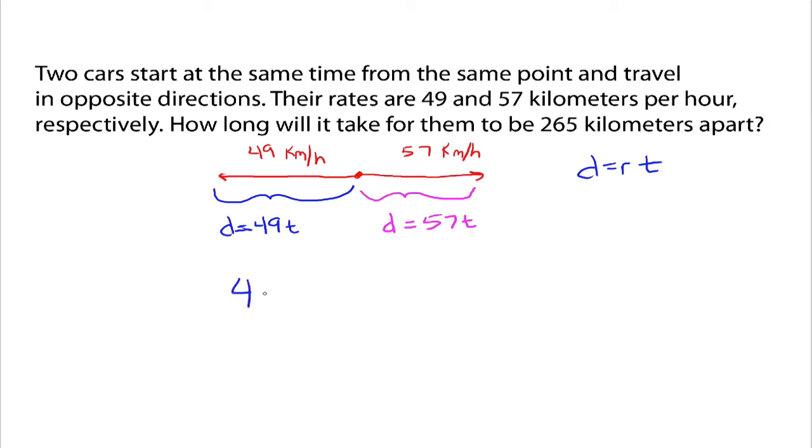So, our equation is 49T plus 57T is equal to 265. Alright? Distance of the first car going out to the left plus the distance traveled by the second car going out to the right. Those two distances added up have to be 265, and that's the equation that we have to solve for T. We get 106T equals 265. Divide both sides by 106, and we get T is 2.5 hours.